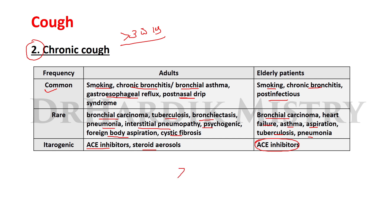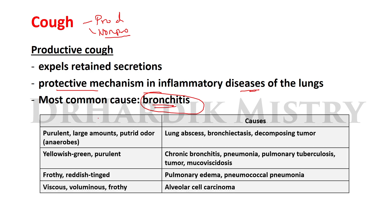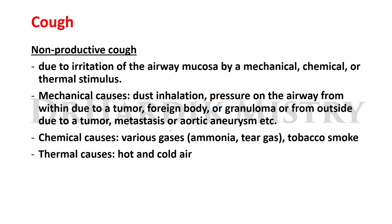Cough may be productive or non-productive. Productive cough expels written secretions and is a protective mechanism in inflammatory disease of the lungs; the most common cause is bronchitis. If productive cough is purulent with a large amount and putrid odor, mainly due to anaerobes, the causes include lung abscess, bronchiectasis, and decomposing tumor. If yellowish-green and purulent, causes include chronic bronchitis, pneumonia, pulmonary tuberculosis, and mucoviscidosis.